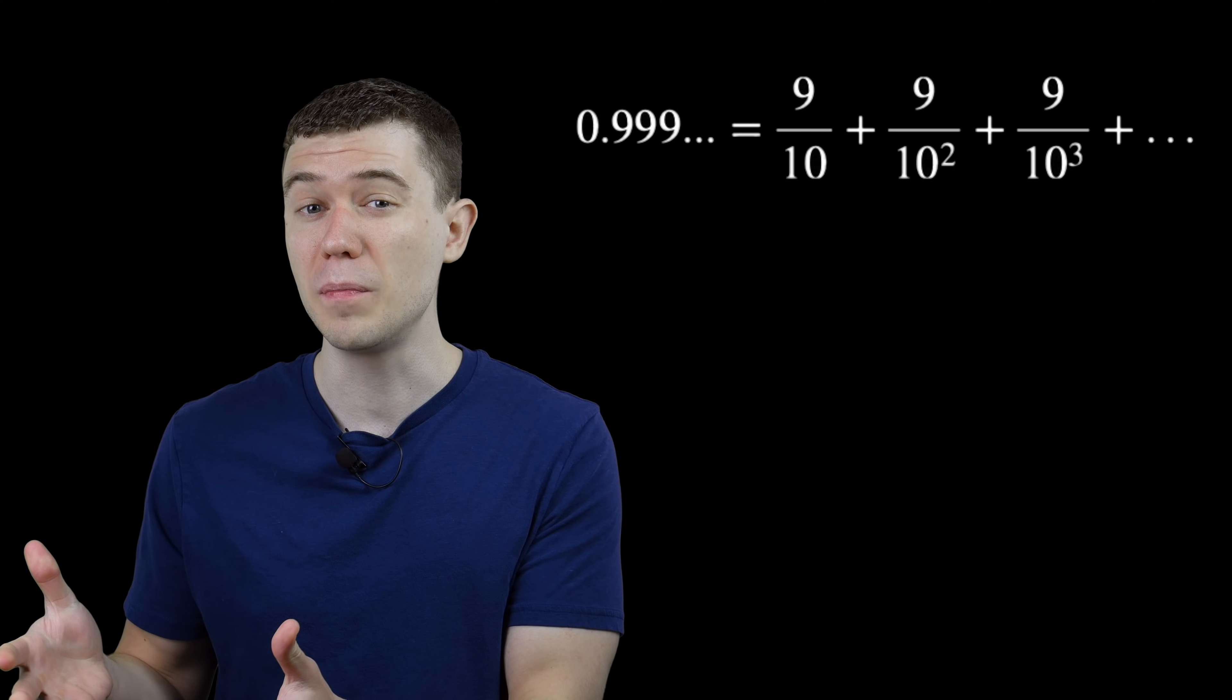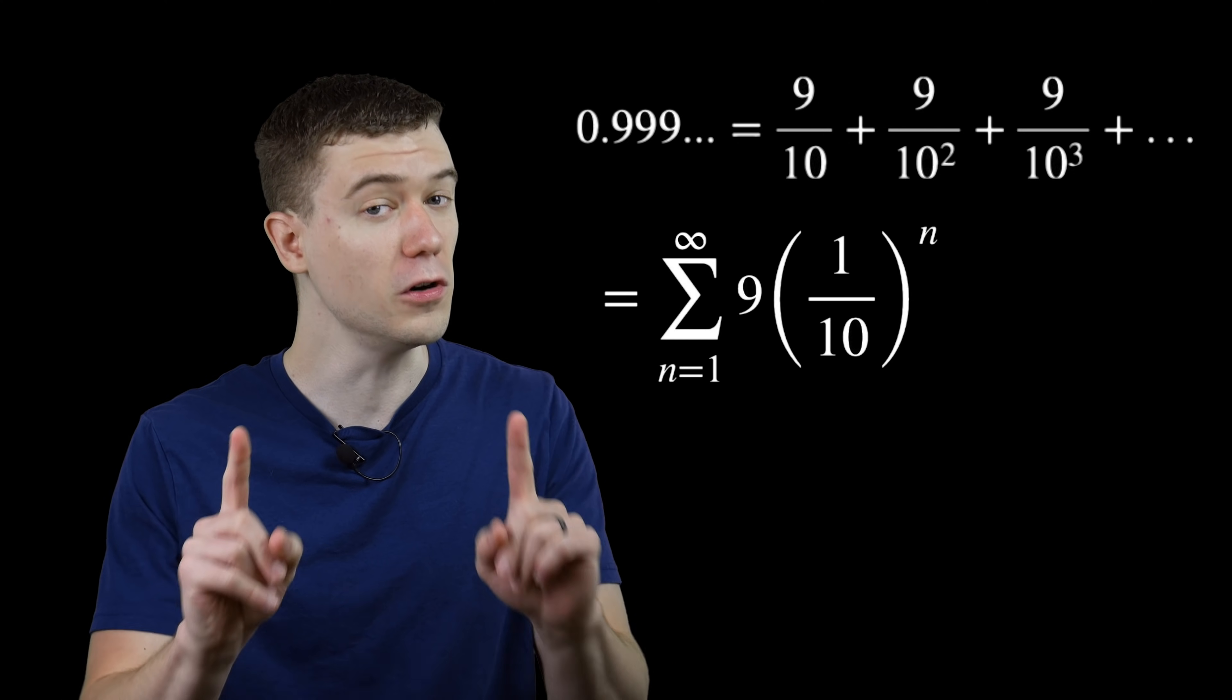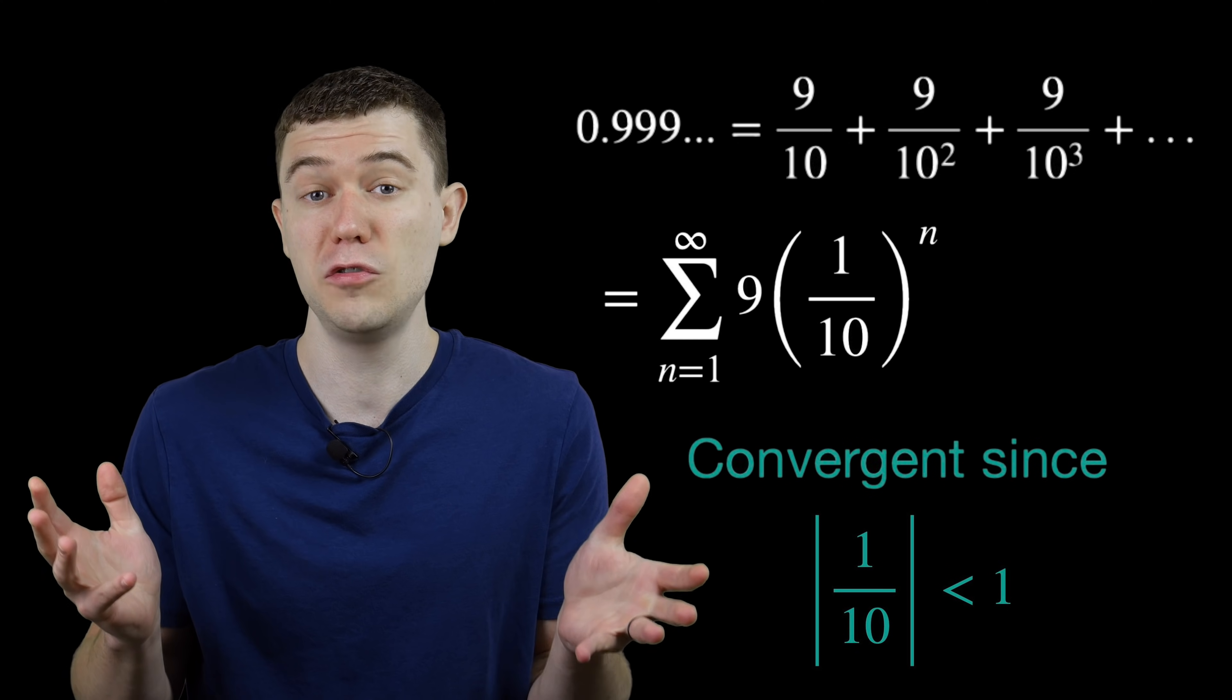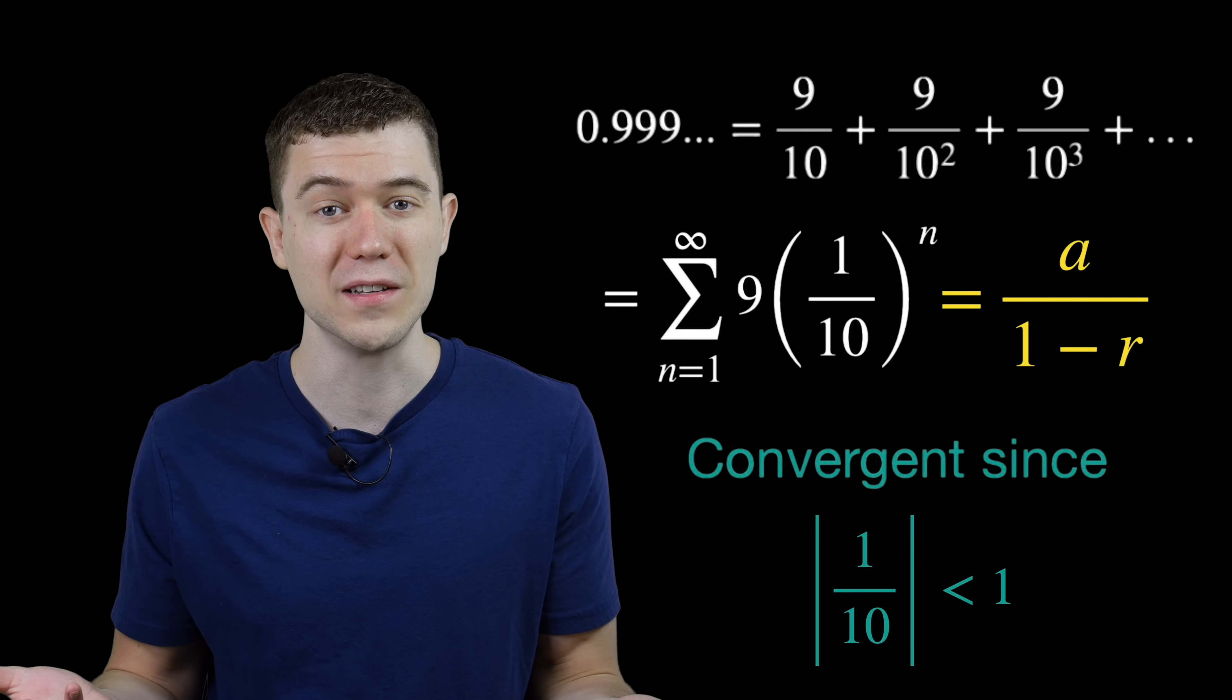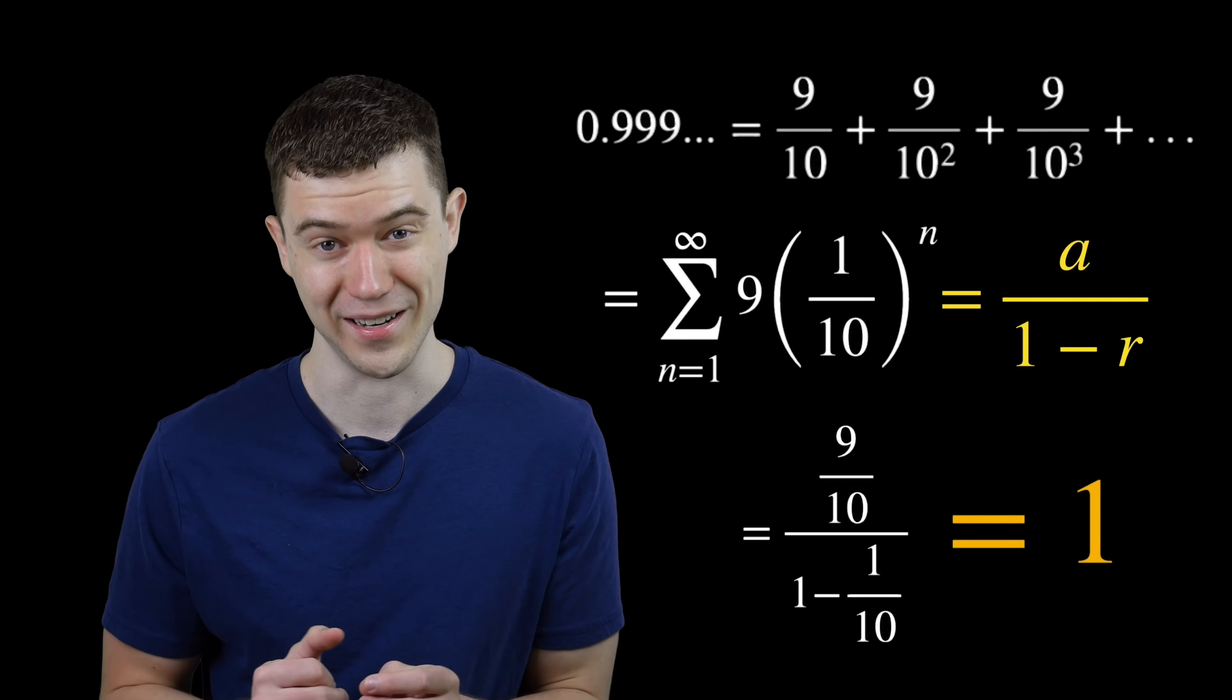Maybe you've even taken Calc 2 and seen that 0.9 repeating can be represented as a geometric series, a convergent geometric series, and you just use the formula A over 1 minus R to sum the geometric series, and you get 1.